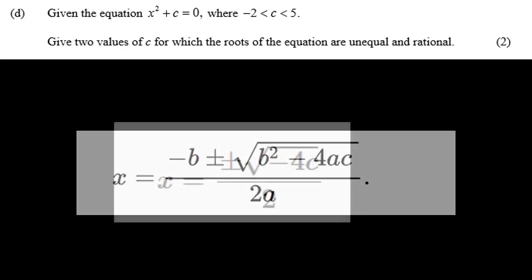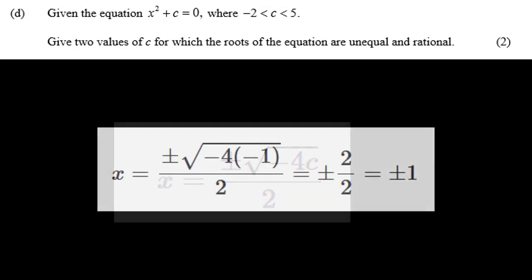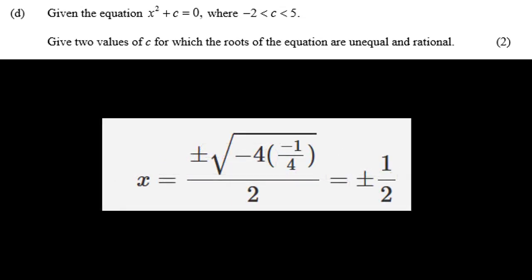When is the square root of minus 4c rational? Well, one case would be where c equals minus 1. So the square root of minus 4c is then the square root of 4, which is 2. Another one would be that if c equals minus 1 quarter, then the square root of minus 4c is the square root of 1, which is 1.